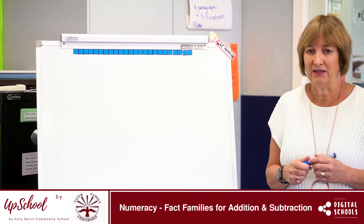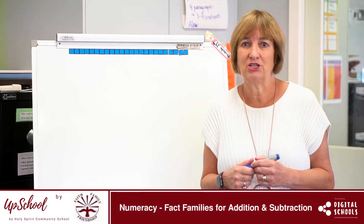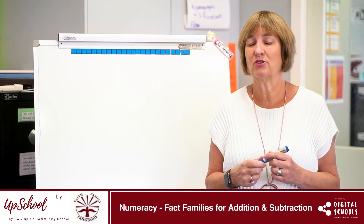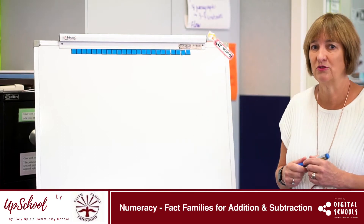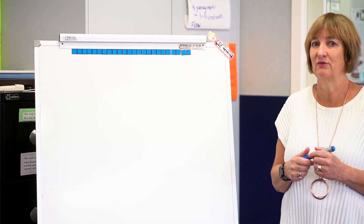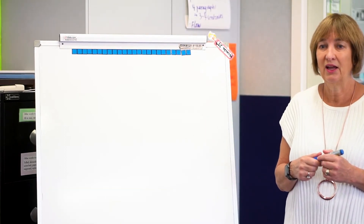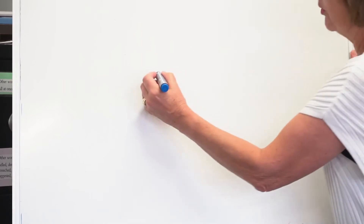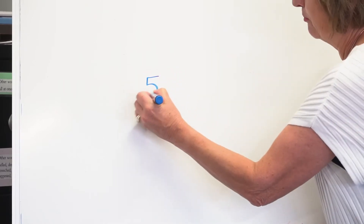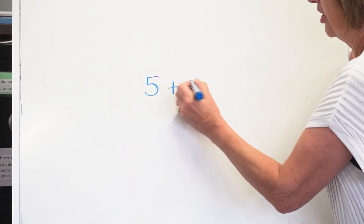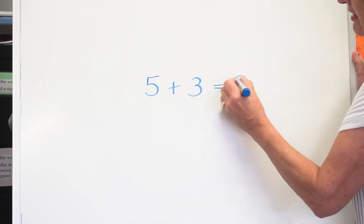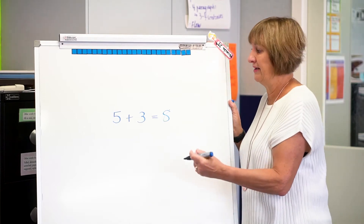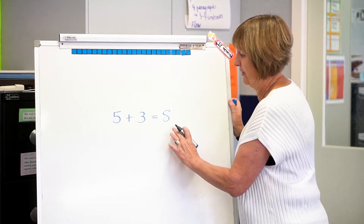I'm going to talk about fact families for addition and subtraction, and I'm going to talk about two different aspects of building facts. The first thing is, we're all aware that it's important to know our facts — our basic facts up to 10, our basic facts up to 20.